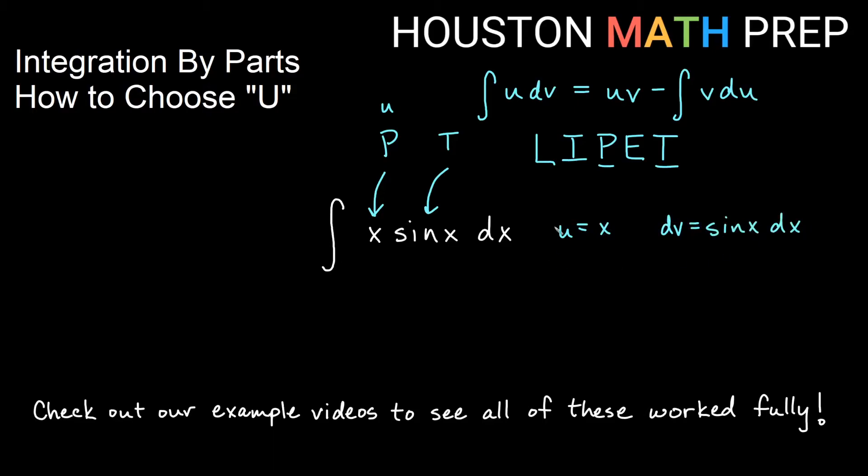We won't do the integral, but we'll just go ahead and complete the rest of the substitutions here. So if U is x, then du would be dx. And remember, we take the antiderivative of dv. So if dv is sine x dx, then v is actually negative cosine x. And we would use our formula to complete this by parts.